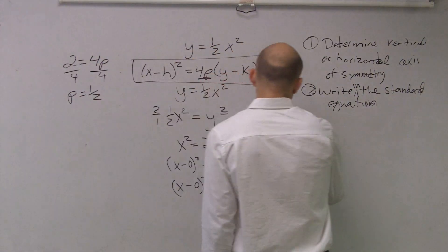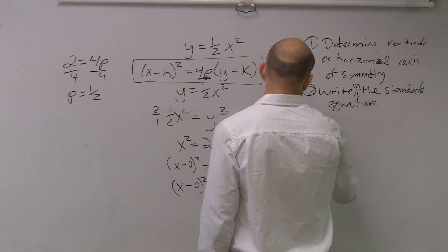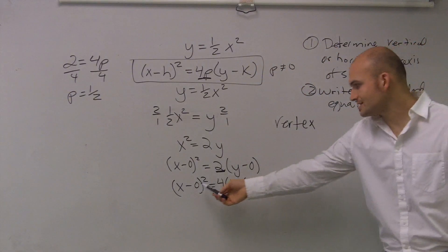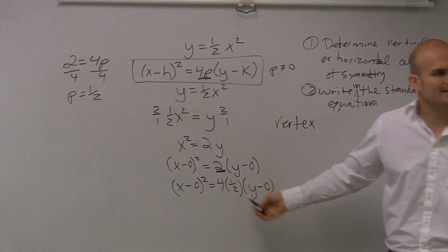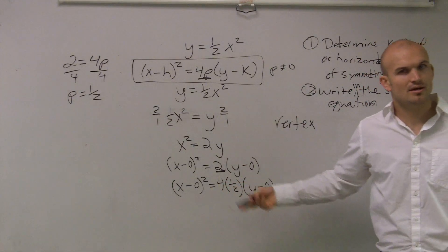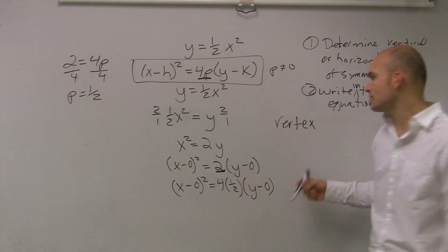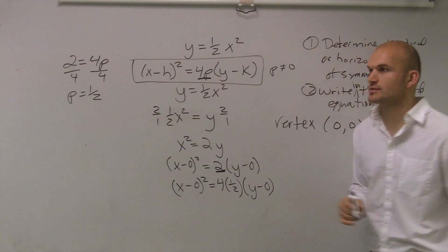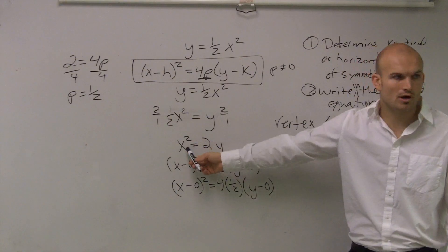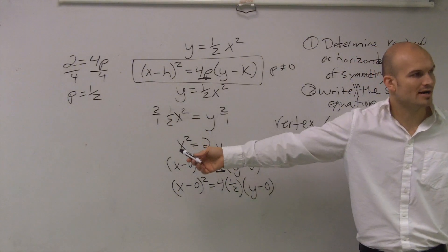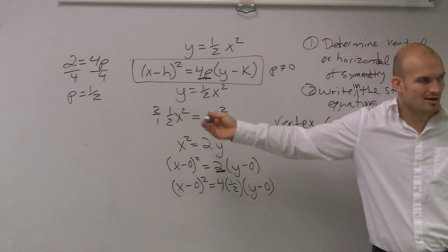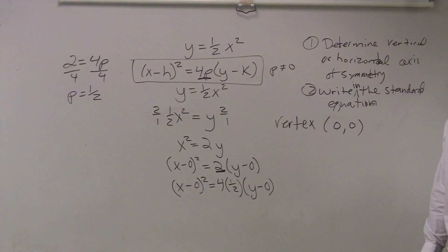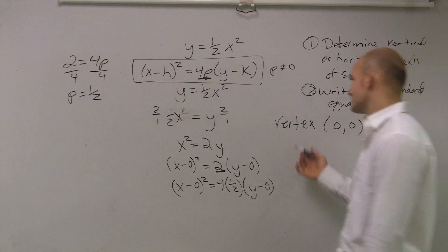So let's identify each component. The first thing is our vertex. Vertex, remember, is your h comma k — it's 0, 0. You don't need to write the x minus 0 and y minus 0, but I wanted to show it for this first problem so you can see that you're going to have 0, 0 as your vertex. The next thing is we need to figure out what the focus is.